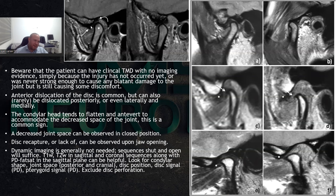What would not be normal is disc dislocation without reduction — meaning you open your mouth and the disc was in front to begin with, and you open your mouth and it does not recapture. That tends to cause locking of the jaw, also known as trismus.